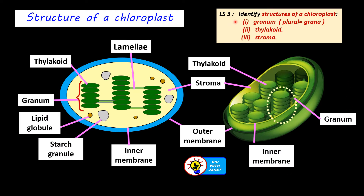Another learning standard: identify the structures of a chloroplast — the granum, thylakoids, and stroma. Thylakoids are disc-shaped structures like stacked coins. These disc-shaped bags contain chlorophyll, which is found on the surface membrane of the thylakoids. Chlorophyll is a photosynthetic pigment in the thylakoid membrane that traps sunlight to start photosynthesis. The thylakoid is the site of the light-dependent reaction (LDR), the first stage of photosynthesis.